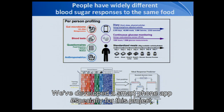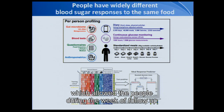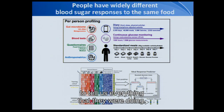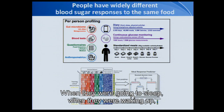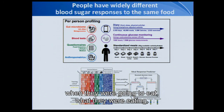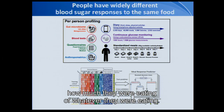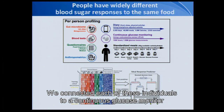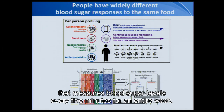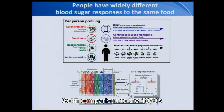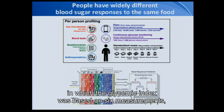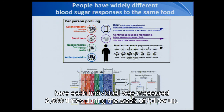We developed a smartphone app especially for this project, which allowed people during the week of follow-up to tell us everything they were doing — when they were going to sleep, when they were waking up, when they were going to eat, what they were eating, and how much. We connected each individual to a continuous glucose monitor that measures blood sugar levels every five minutes for an entire week. So in comparison to the 1970s, in which the glycemic index was based on six measurements, here each individual was measured 2,500 times during the week of follow-up.